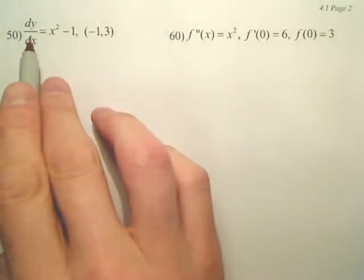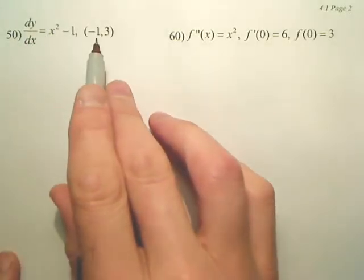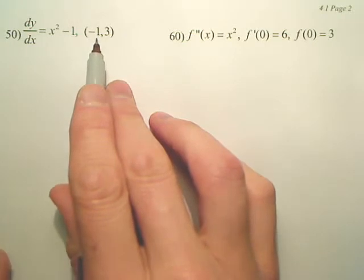For this one, we have a derivative. We want to find the original equation at negative 1, 3.